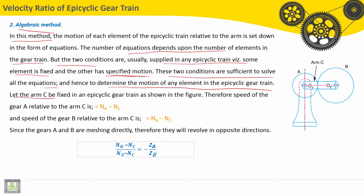Let the arm C be fixed in an epicyclic gear train as shown in the figure here. C is fixed. Therefore, speed of the gear A relative to the arm is equal to NA minus NC.